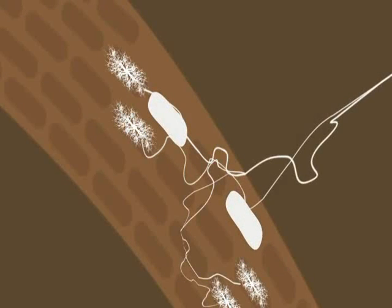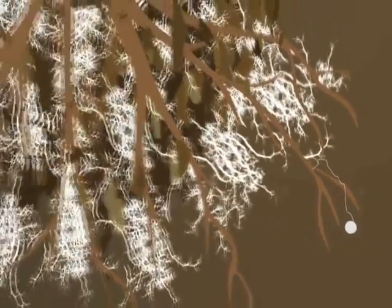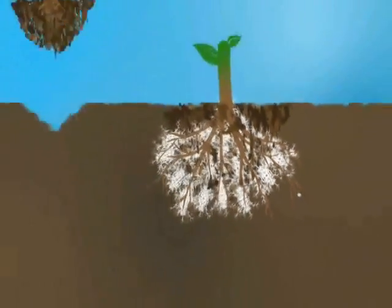Mycorrhizae form structures where both the plant and the beneficial fungus can exchange food and energy. These mycorrhizal filaments radiate out into the surrounding soil and form an elaborate web of tiny absorbent threads.